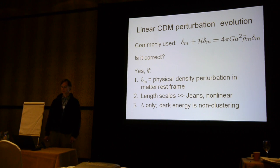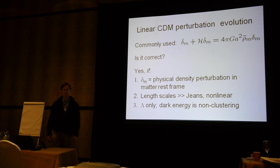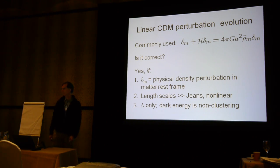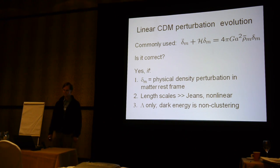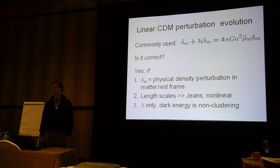This equation, in the Newtonian limit, assumes that the only force acting on dark matter particles is gravity — there are no pressure forces. It is only the gravity of the dark matter and baryons, anything that clusters, that produces the density perturbation on the right-hand side. For self-consistency, pressure forces must be negligible, meaning that the length scales of interest must be much larger than the Jeans length. Moreover, because this is linear perturbation theory, the density perturbations must be small — in practice, length scales larger than about 10 to 50 megaparsecs.